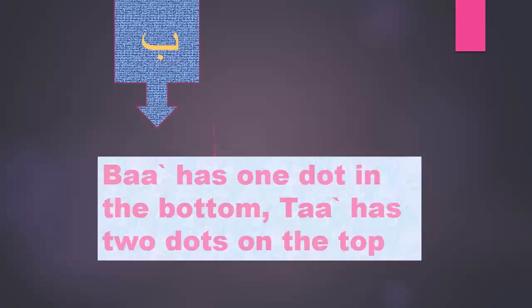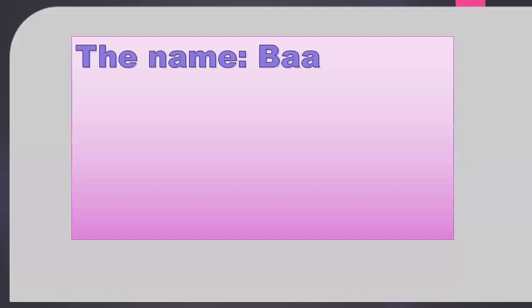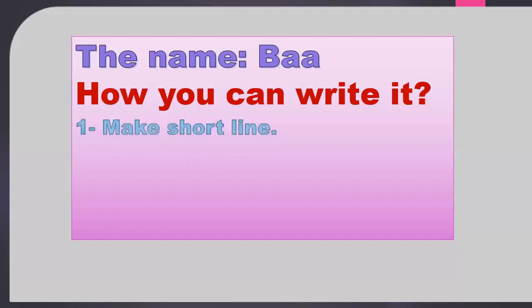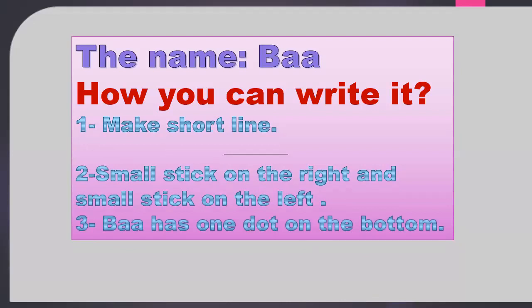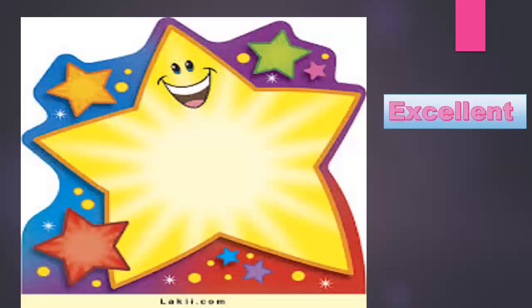The family of Ba has three letters. Letter Ba has one dot on the bottom. Ta has two dots on the top. The name Ba — please read it after me: Ba. How do you write it? Make a short line, a small stick on the right and a small stick on the left. Ba has one dot on the bottom. Please write letter Ba. Excellent!